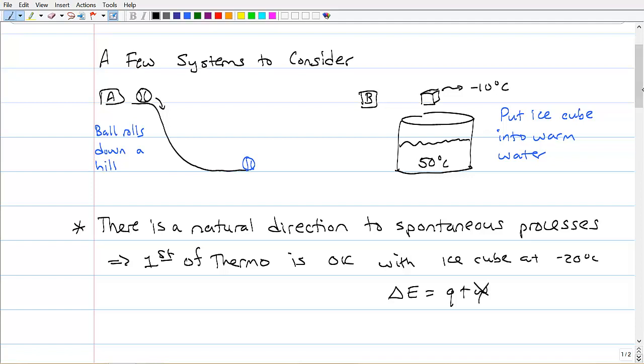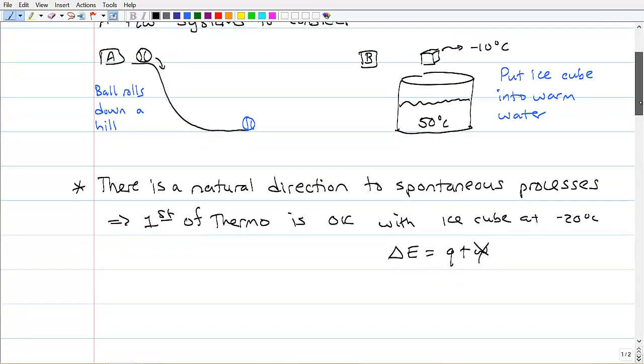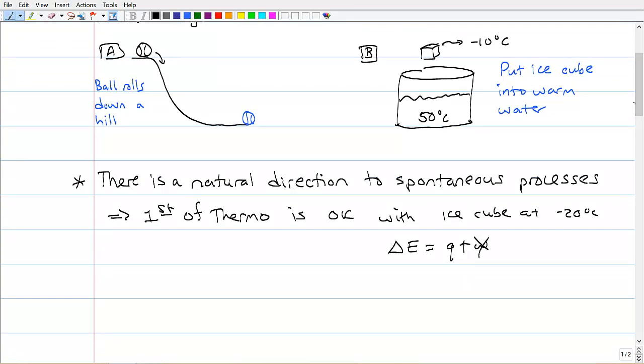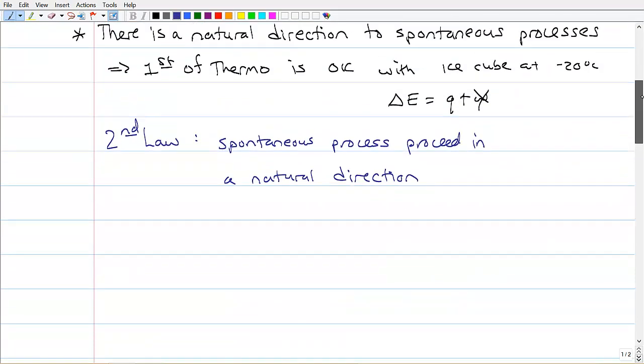So what we've just seen here is, just with two simple examples, a necessity to go beyond the first law and create the second law of thermodynamics. So the second law, it's going to establish this, that these spontaneous processes, they proceed in a natural direction.